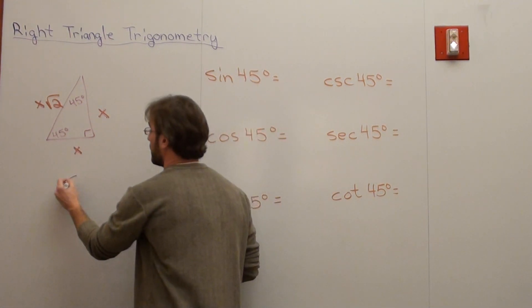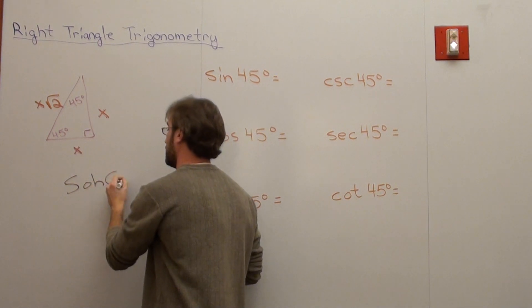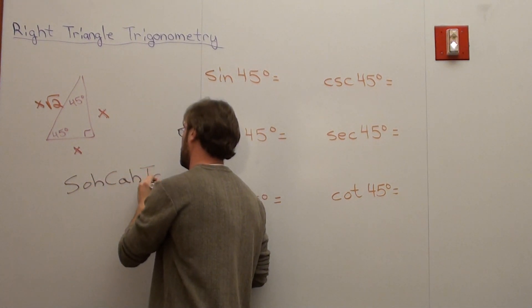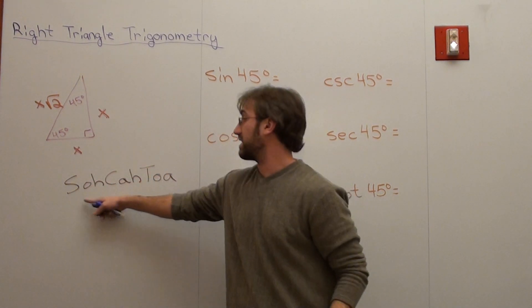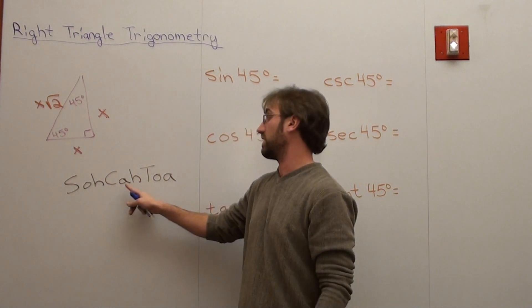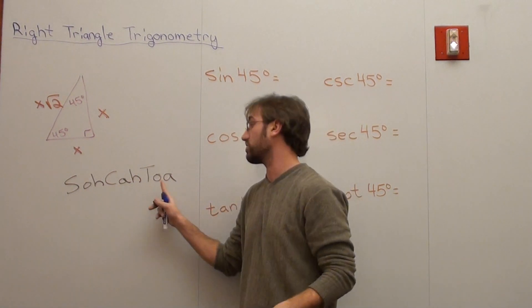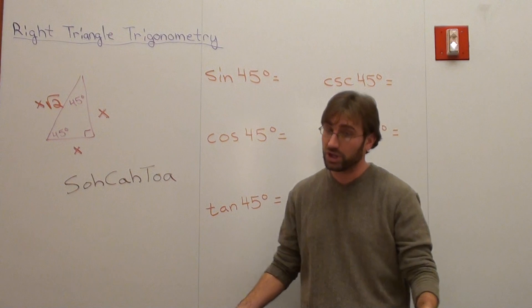And if you'll help, use this. So SOHCAHTOA, where the sine is the opposite over the hypotenuse, the cosine is the adjacent over the hypotenuse, and the tangent is the opposite over the adjacent. Pretty cool.